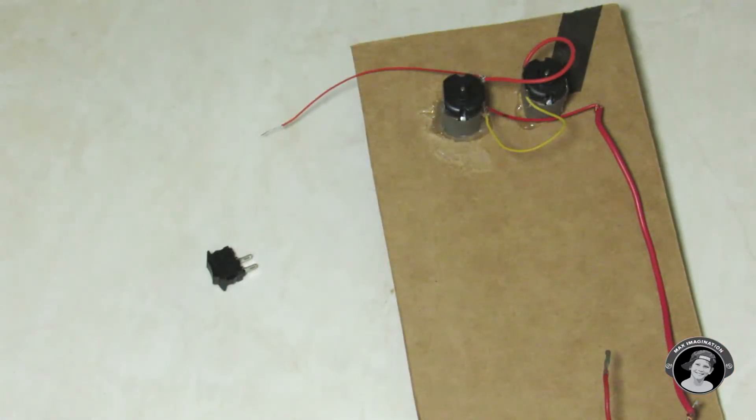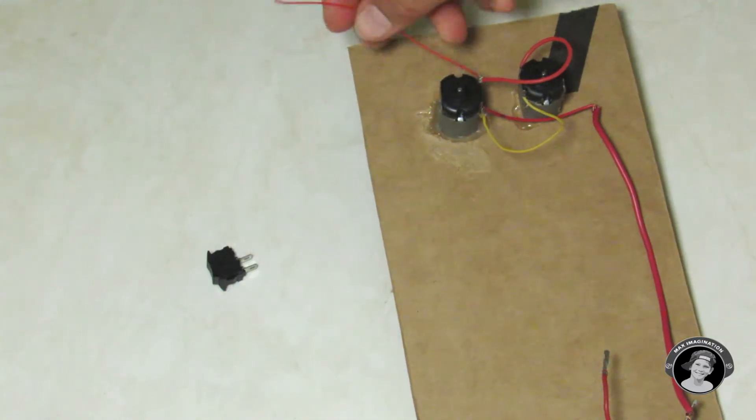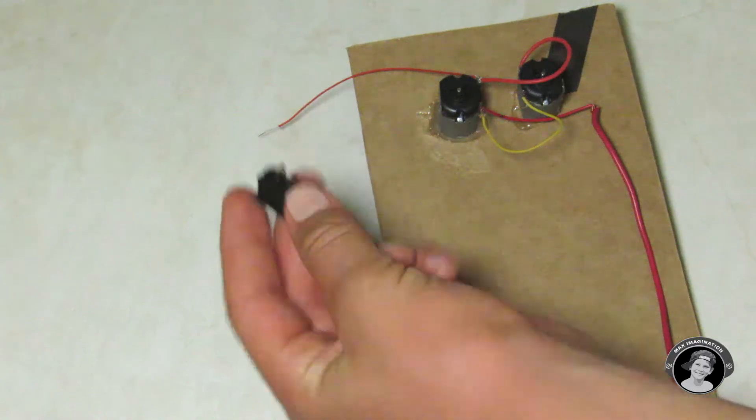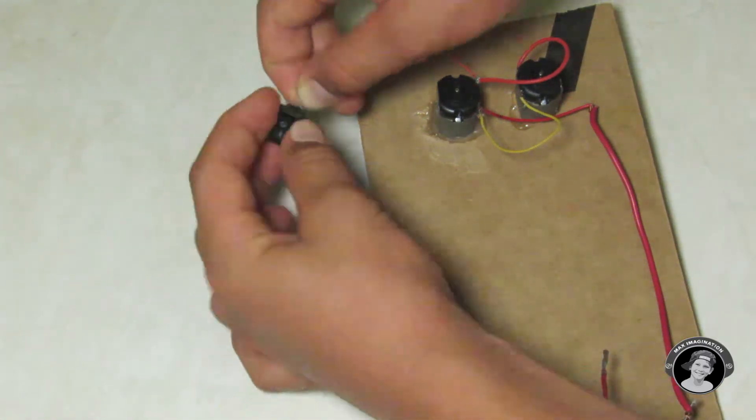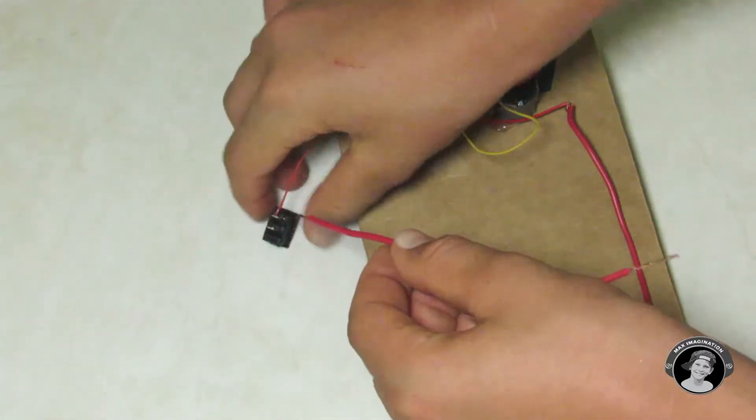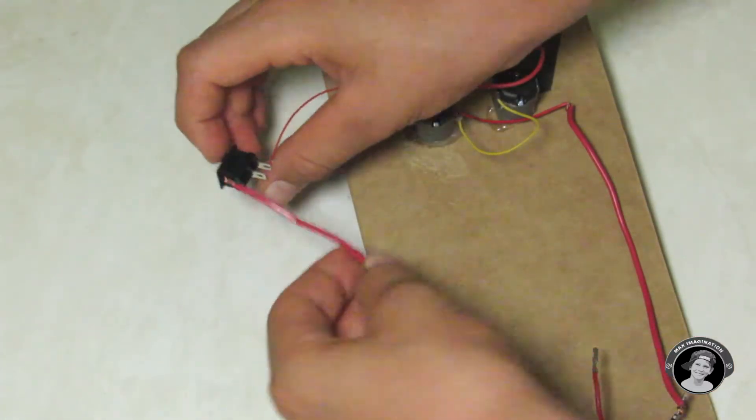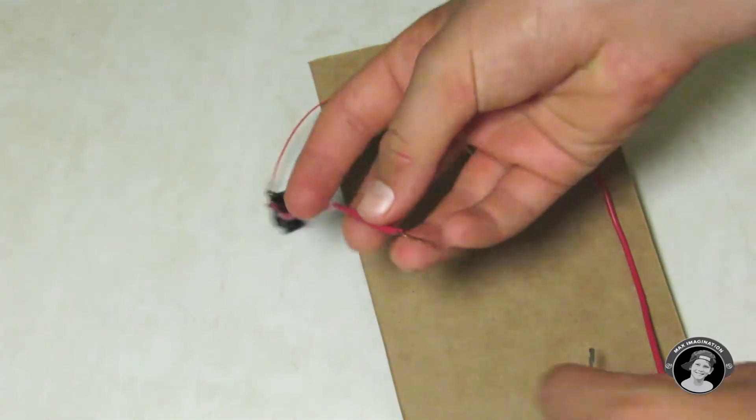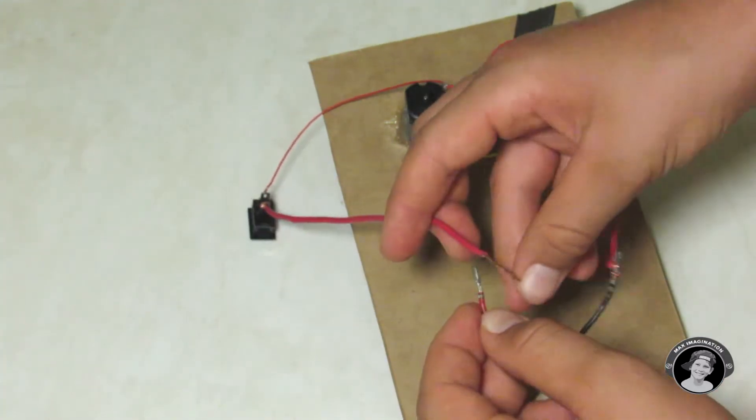And then we're going to attach the positive wire from the DC motor to one of the other ends on the switch. Then you're going to take your other wire and connect it up to your switch and then to the battery, and take this wire and wire it to the negative end on the battery.